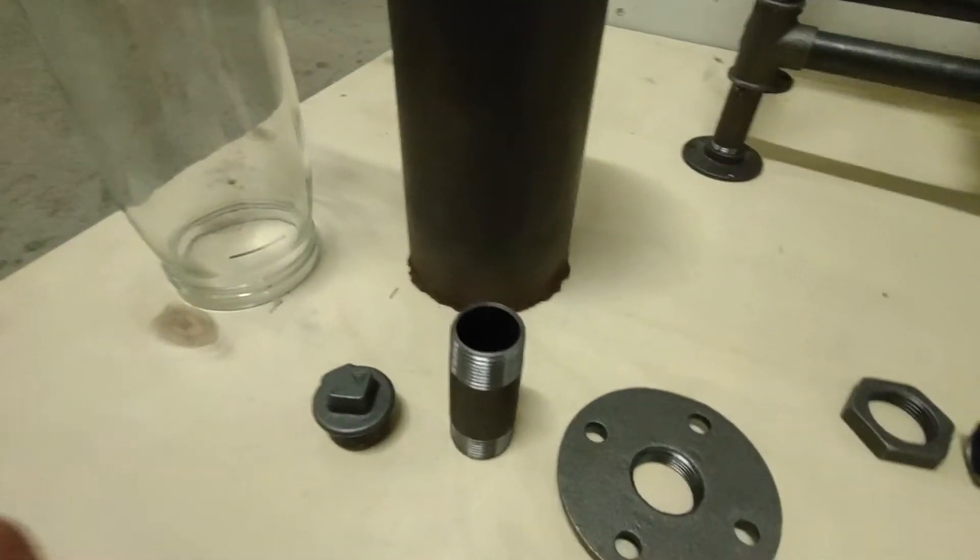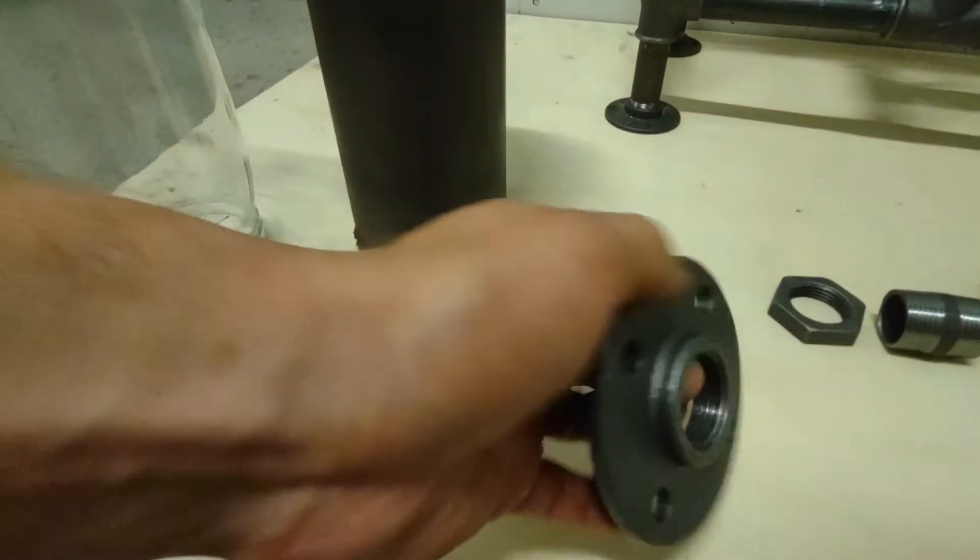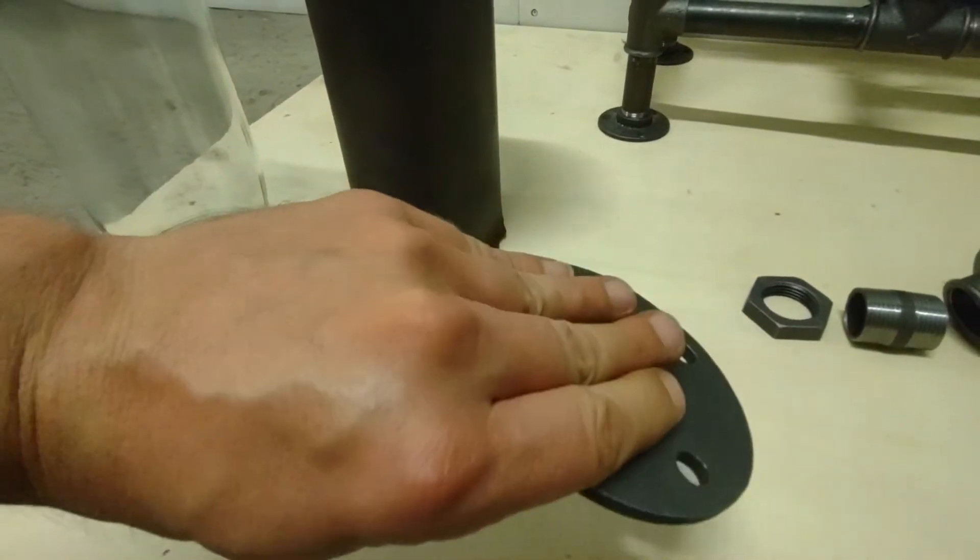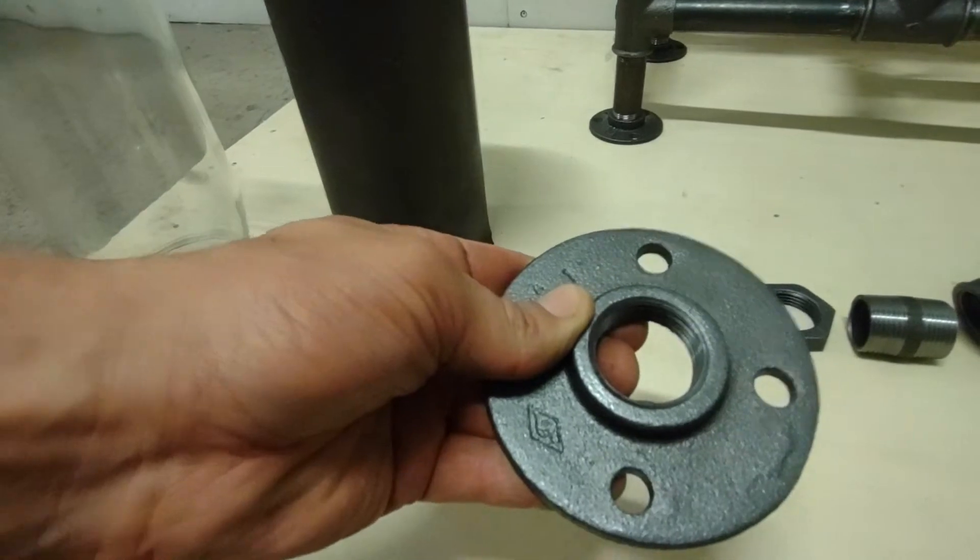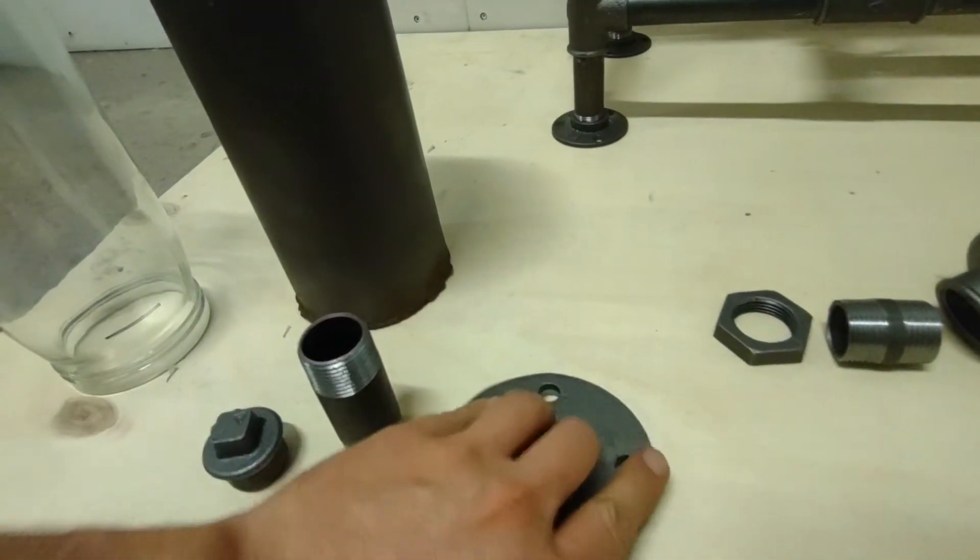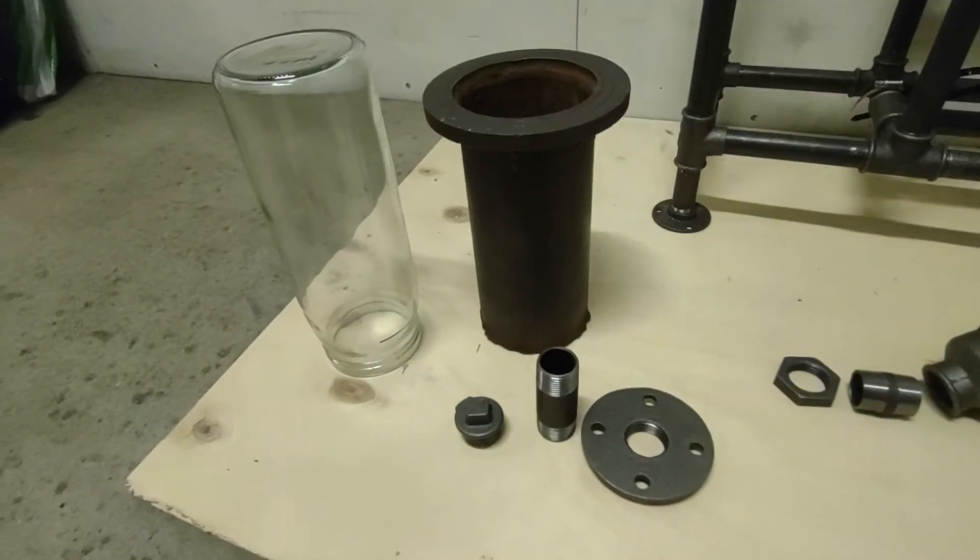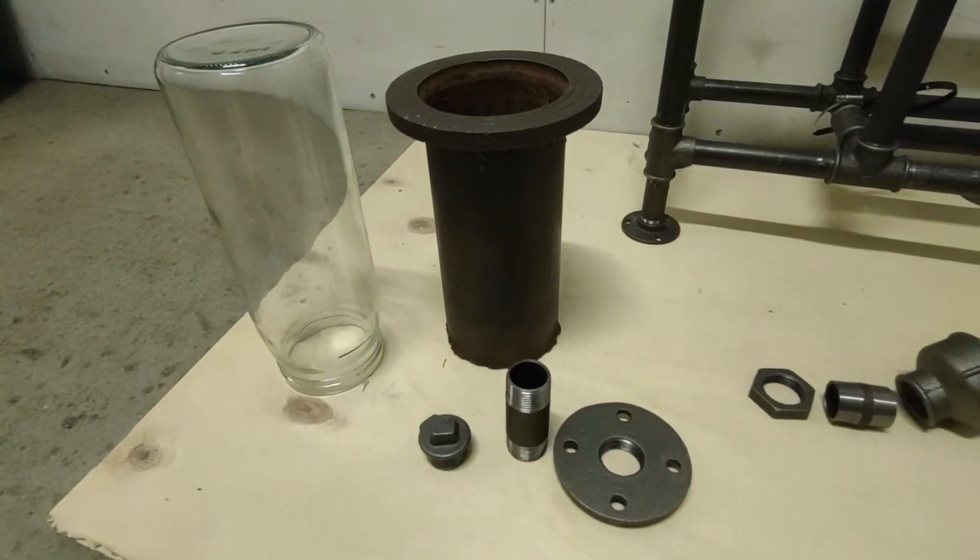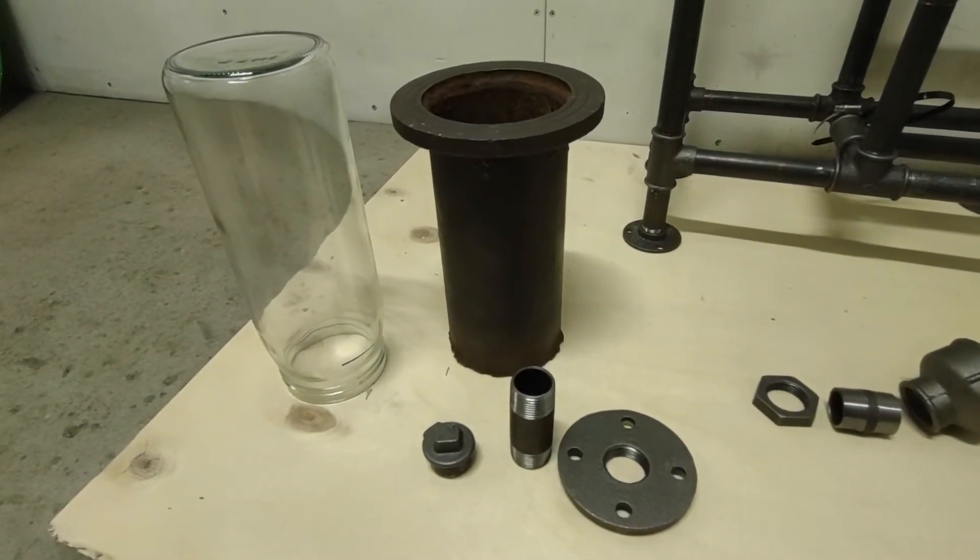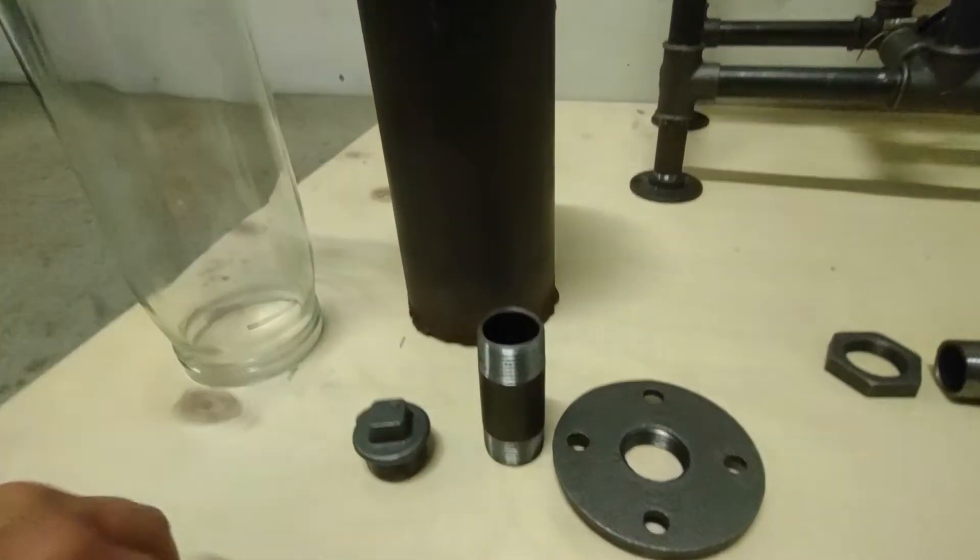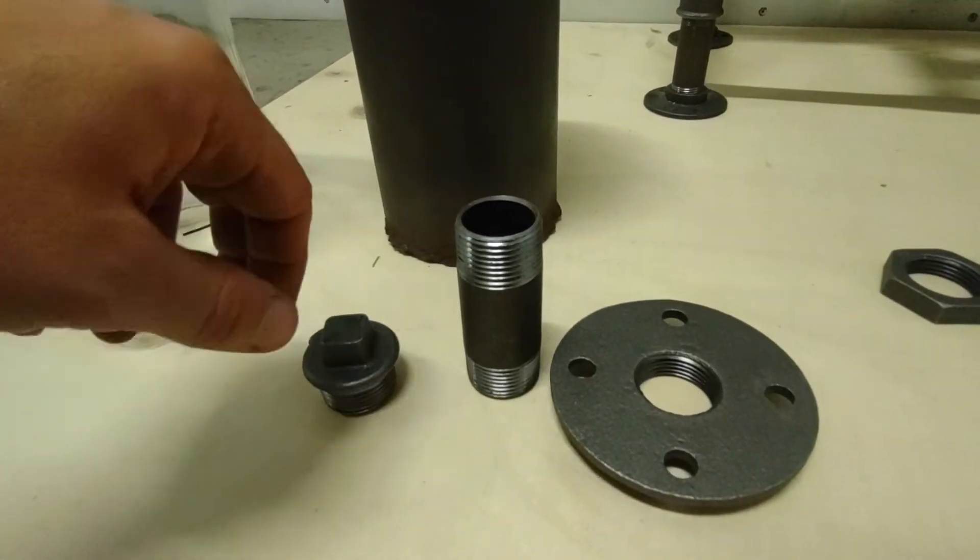At the bottom I would like to weld this steel flange, and the mechanism to release the roasted coffee will work as follows.